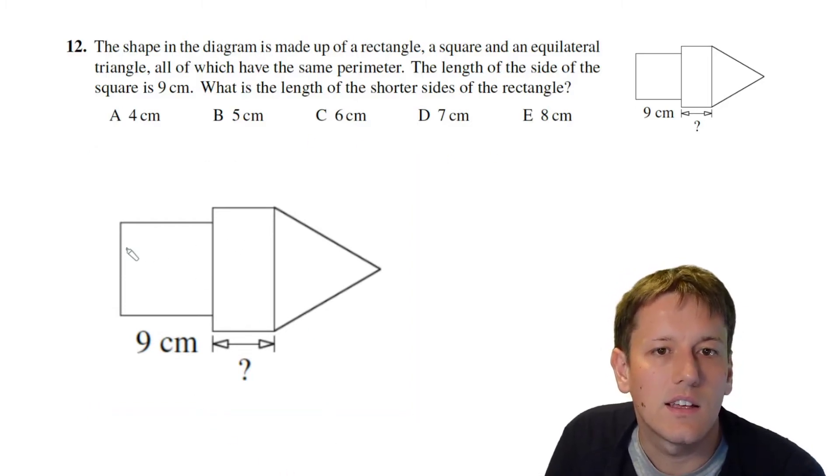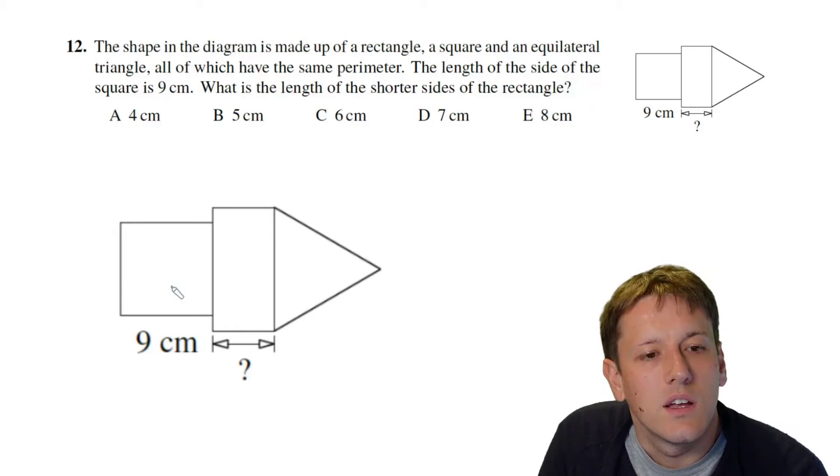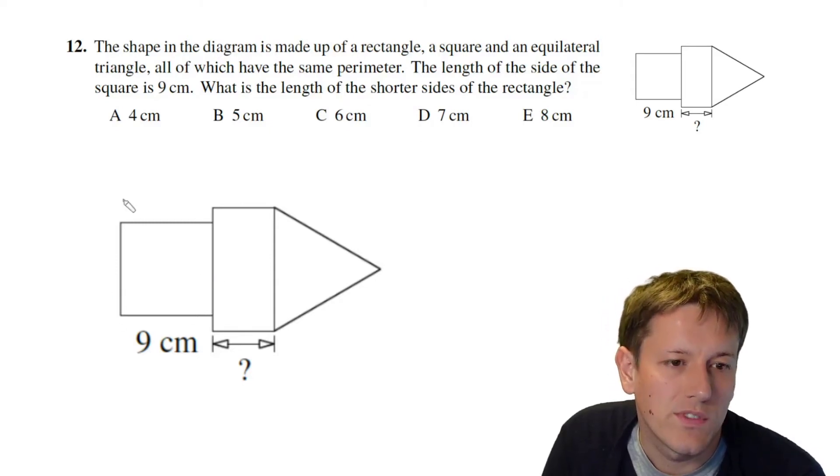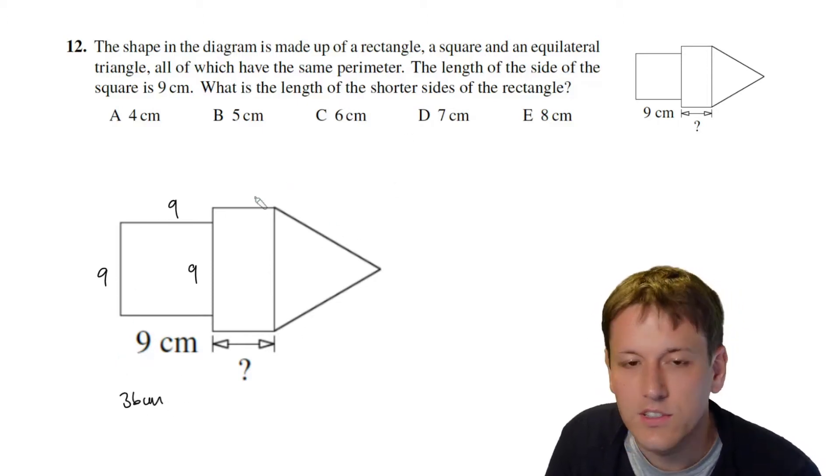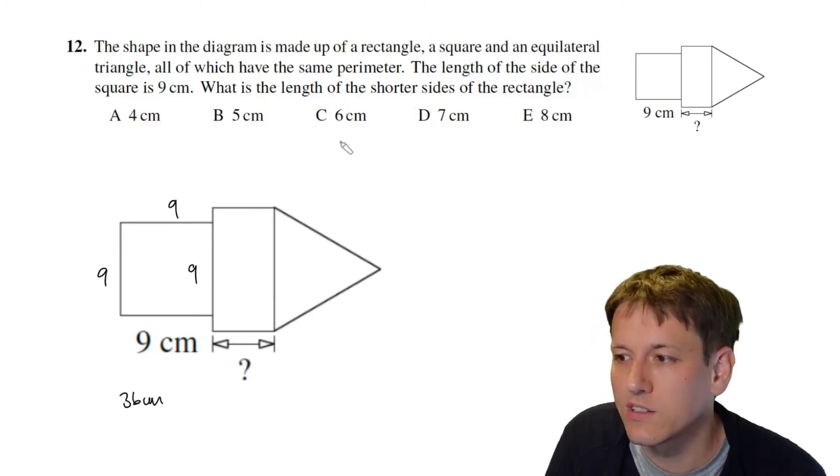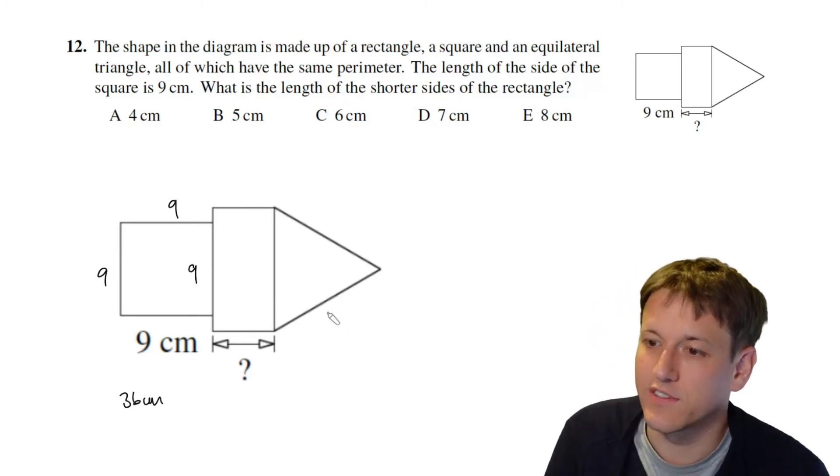And so the key here is that all of the parts have the same perimeter so we know we've got a square of side length 9 so all of its sides are 9 and that perimeter is 4 times 9 which is 36 centimeters. So when we look at the equilateral triangle that also has to have a perimeter of 36 centimeters.